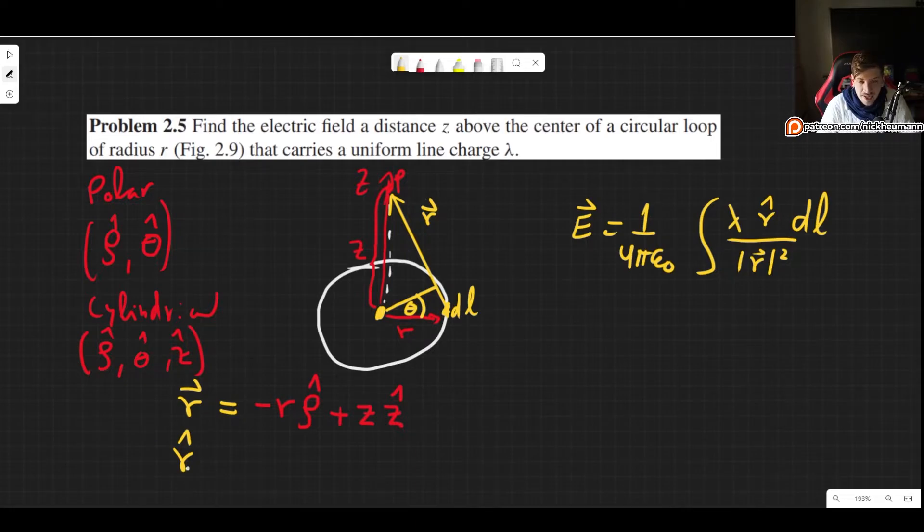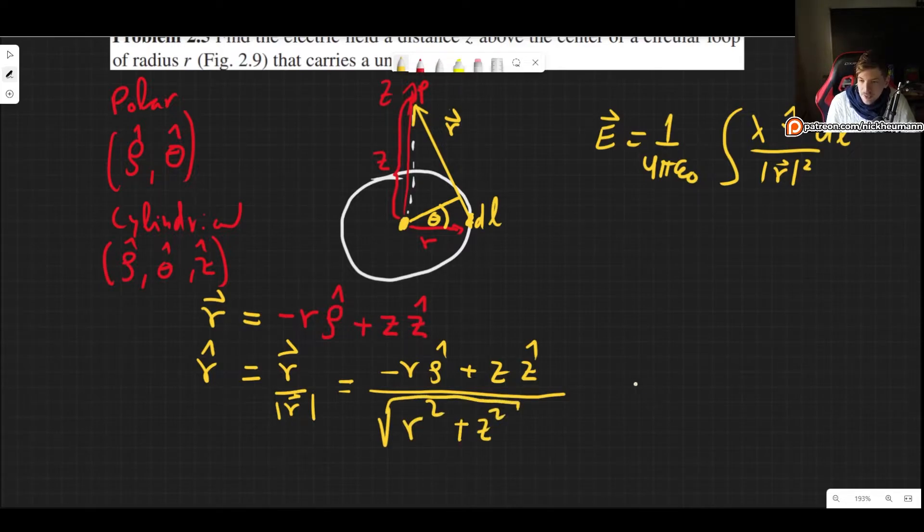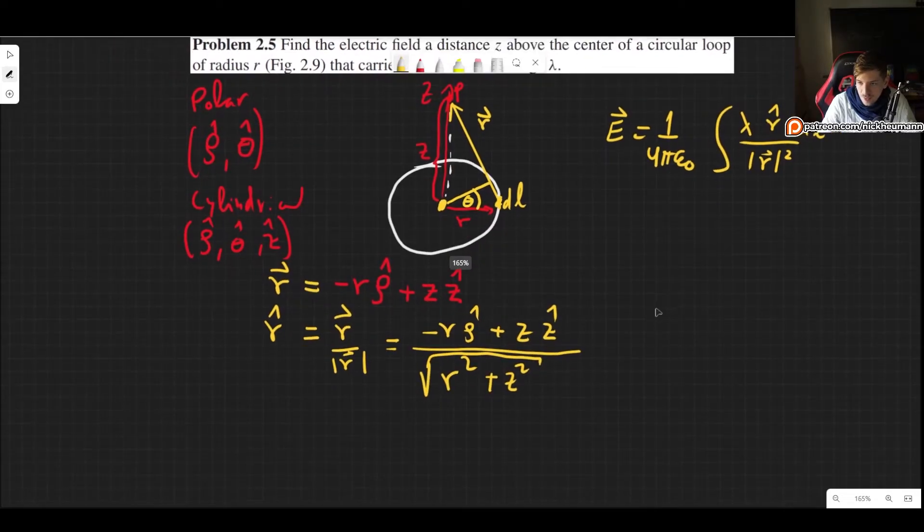If we now want to find the unit vector, we need to take the r vector and divide by its modulus. The modulus is simply going to be the Pythagorean theorem of this. So r vector is minus r ρ-hat plus z z-hat, and the modulus is square root of r² plus z².